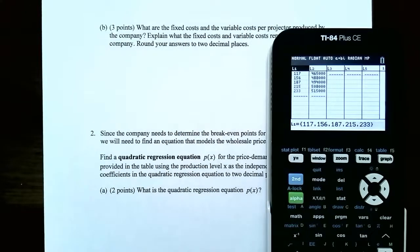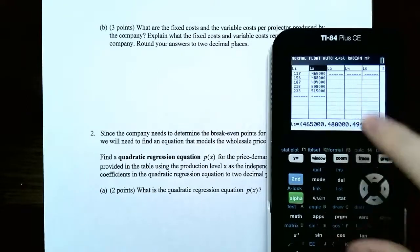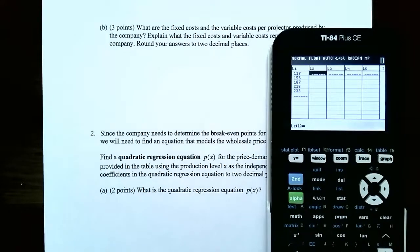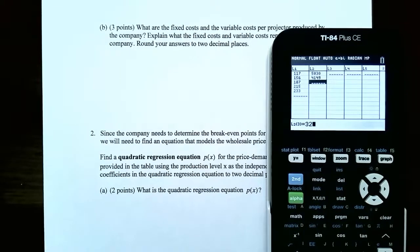Scroll over using the arrow keys so that L2 is highlighted, hit Clear, then hit Enter. It will clear out the entire list. Now enter in the wholesale prices: $5,030, $4,149, $3,267, $2,333, and the last one is $1,664.